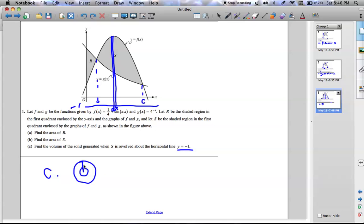So this radius is f of x plus 1. And the little one is this little one, and that would be g of x plus 1.